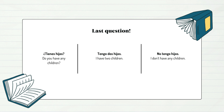And we might want to know more about them, so we can ask: ¿Tiene hijos? — Do you have any children? Tengo dos hijos — I have two children. Or: No tengo hijos — I don't have any children.